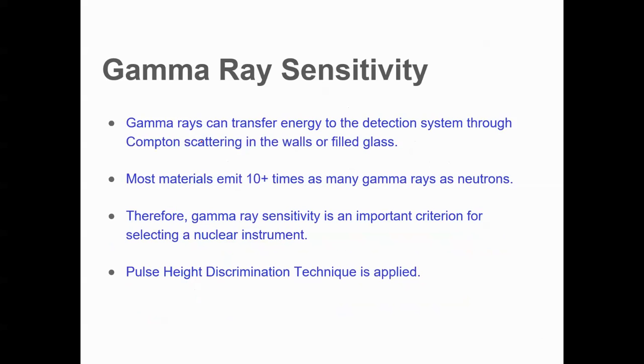So before discussing what is pulse height discrimination, we need to know what is gamma ray sensitivity. Gamma rays can transfer energy to the detection system through Compton scattering in the walls or filled glass. Most materials emit 10 plus times as many gamma rays as neutrons. Therefore, gamma ray sensitivity is an important criterion for selecting a nuclear instrument.